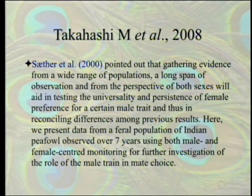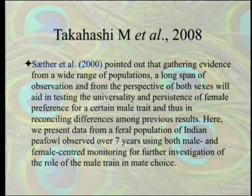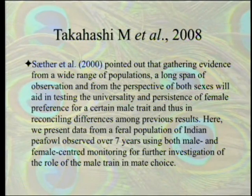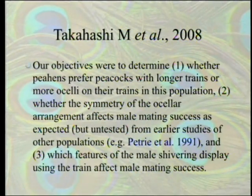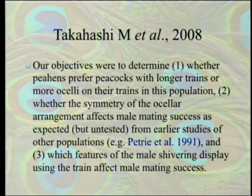Gathering evidence from a wide range of populations, a long span of observation, and from the perspective of both sexes will aid in testing the universality and persistence of female preference for a certain male trait. The objectives were to determine: one, whether peahens prefer peacocks with longer trains or more ocelli on their trains in this population; two, whether the symmetry of the ocellar arrangement affects male mating success.